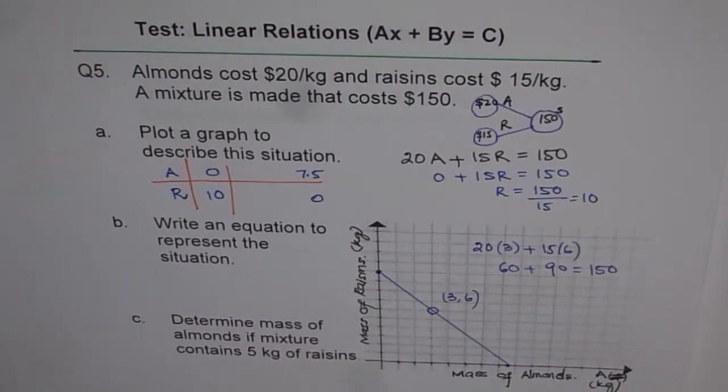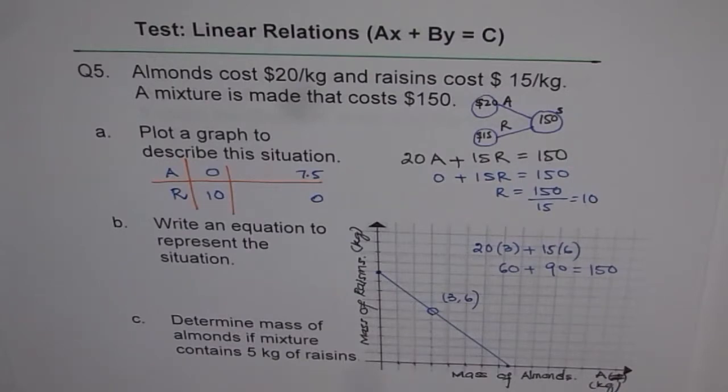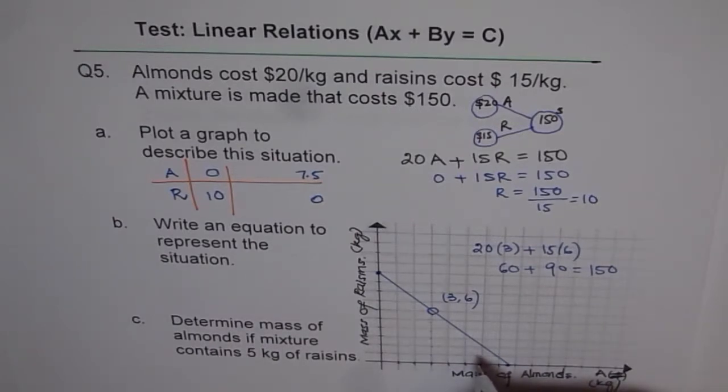So this line actually represents the ratio in which almonds and raisins can be added to give an amount of $150. Do you see that? We can look for other points and do similar calculations. So you can try this out. I'd like you to fill this table up, at least 4 points.